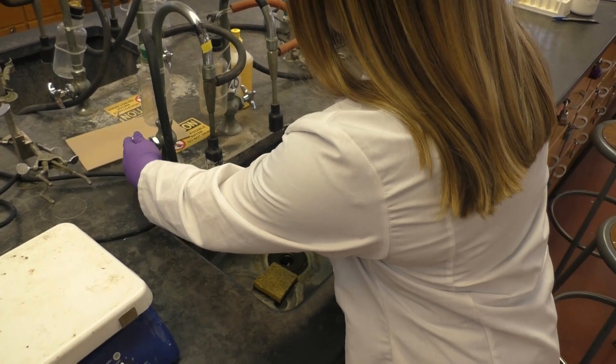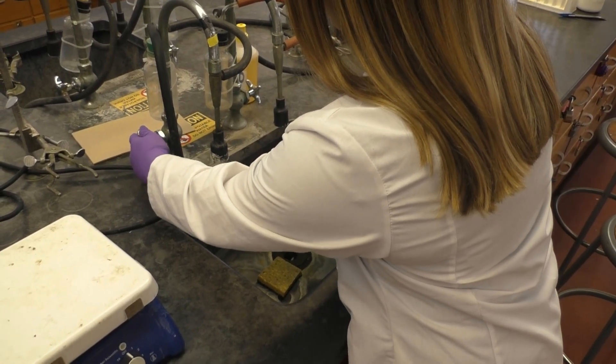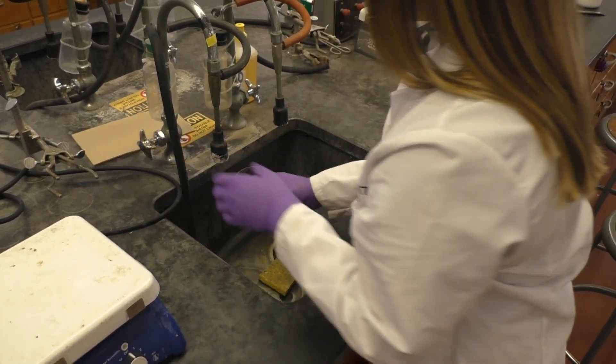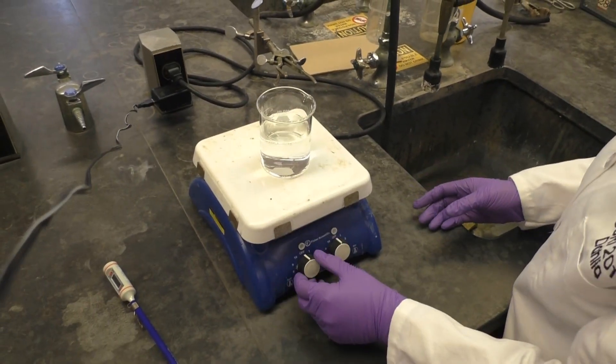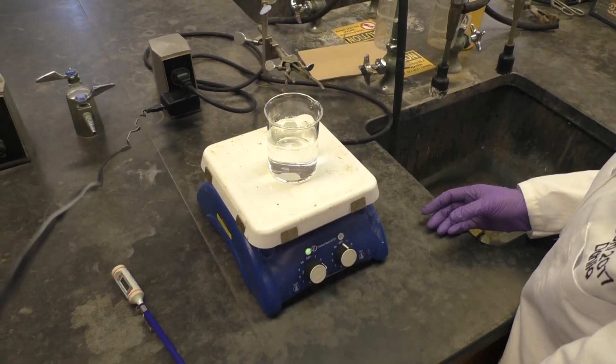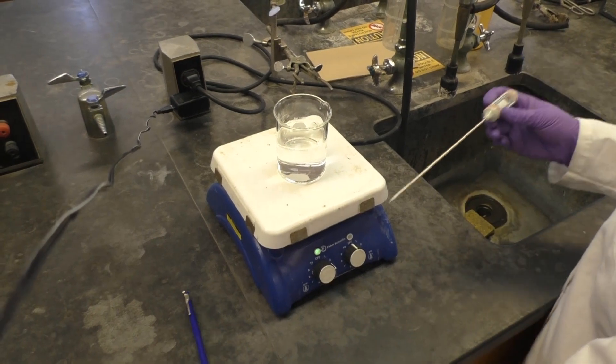Start the experiment by filling your 250 milliliter beaker about three-fourths of the way full with water and then gently heat it on your hot plate. We do not want this water to boil, so be sure to keep it between 70 and 80 degrees Celsius.